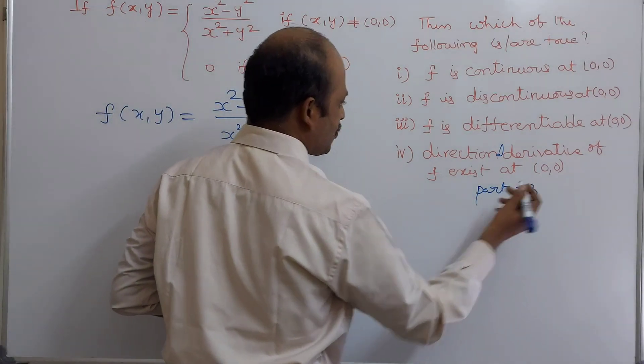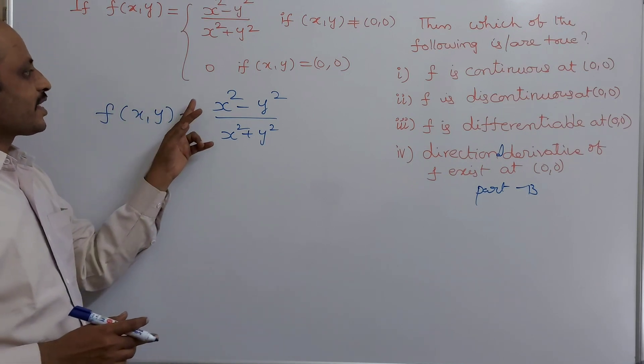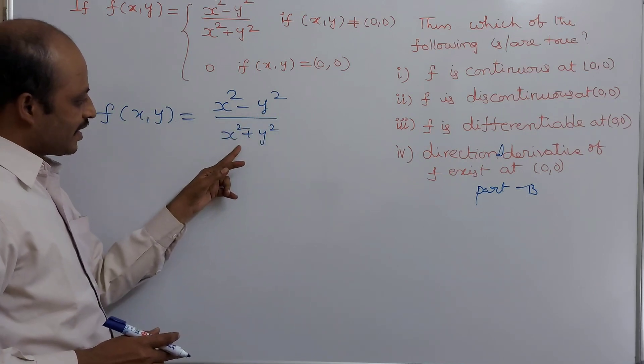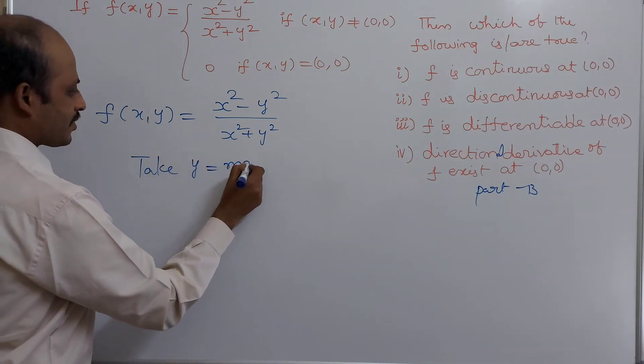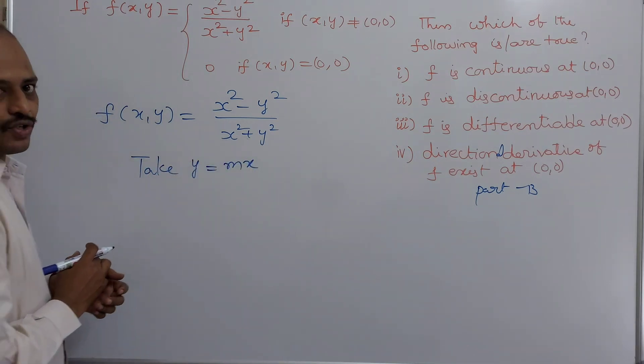Part B means there is only one correct option. f(x,y) is equals to x square minus y square divided by x square plus y square. Let us take y equals mx.